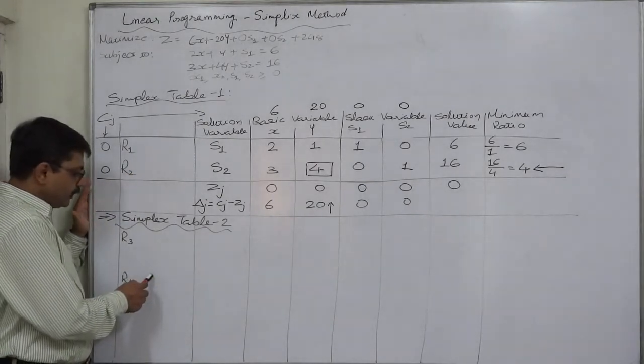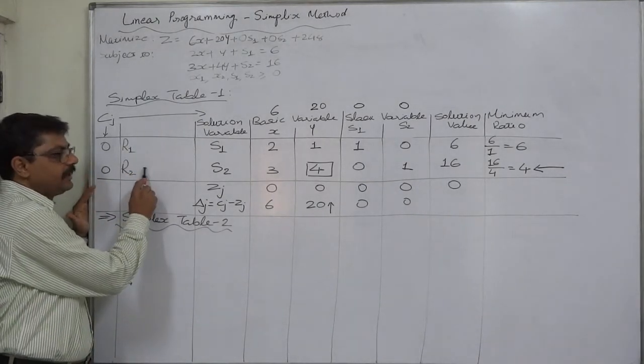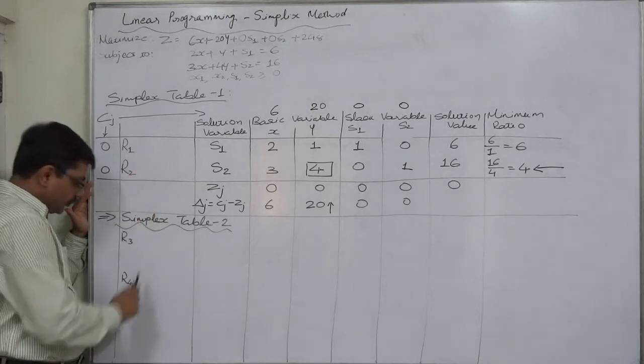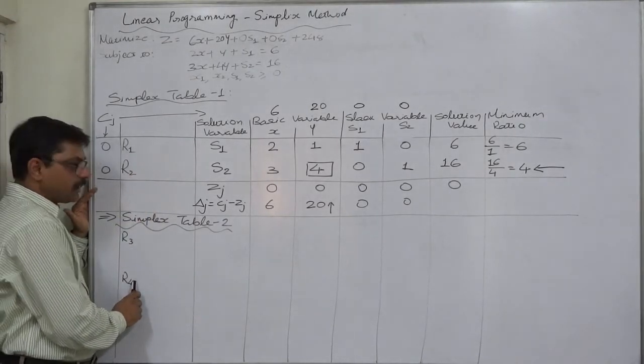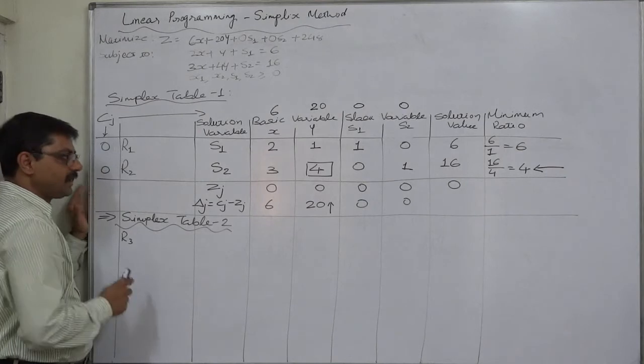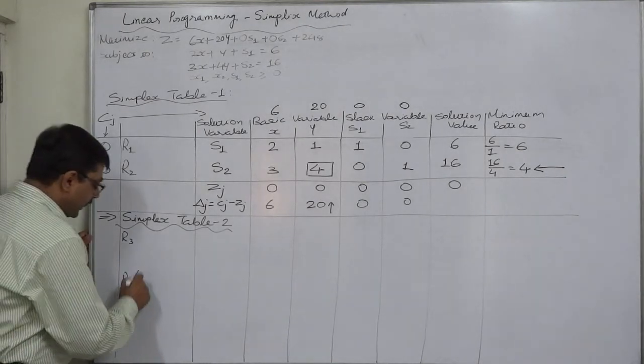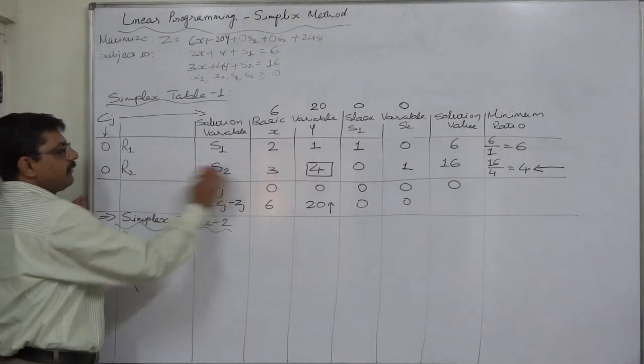First we have to write a row in the new table at the place of key row. So in the place of r2, r4 comes. We have to write r4 first, and the formula of r4 is key row divided by key element: r2 divided by 4, or 1/4th of r2.